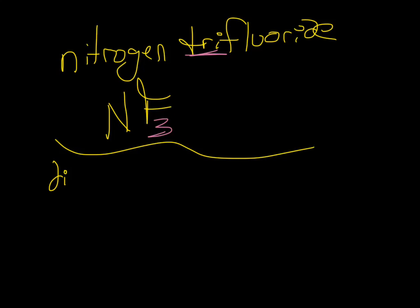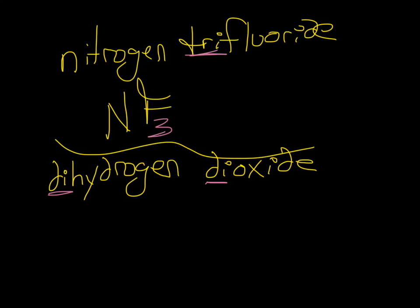Let's try another one. How about dihydrogen dioxide? So we have a di and a di. That means we have hydrogen, but there are two of them. We have oxygen, but there are two of them. That's it. That's all there is to formula writing. Told you you'd like it. Alright, that's it for today.